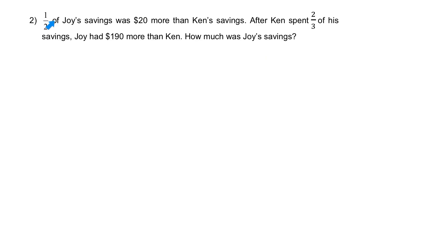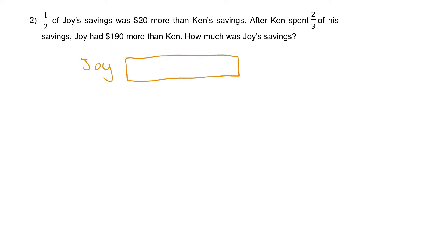Question 2: Half of Joy's savings was $20 more than Kent's savings. After Kent spent two-thirds of his savings, Joy had $190 more than Kent. We'll draw this one sentence at a time. Starting with the first sentence: half of Joy's savings — so we have Joy, and this represents half her savings, with another half implied. Half of her savings is $20 more than Kent's savings.